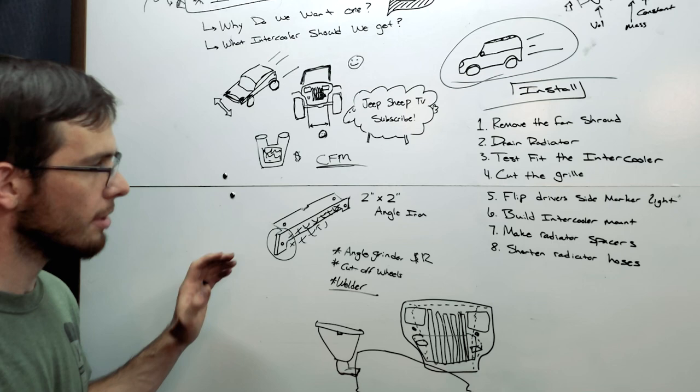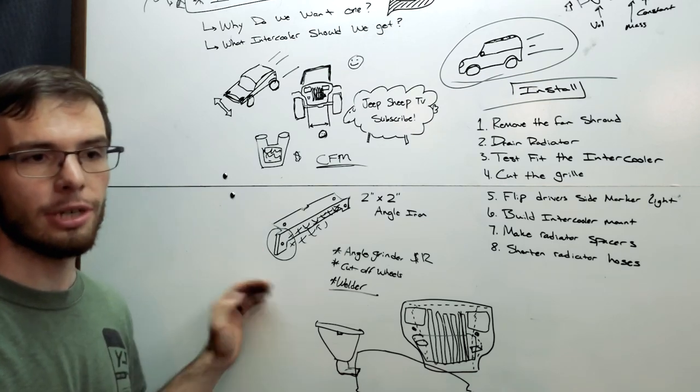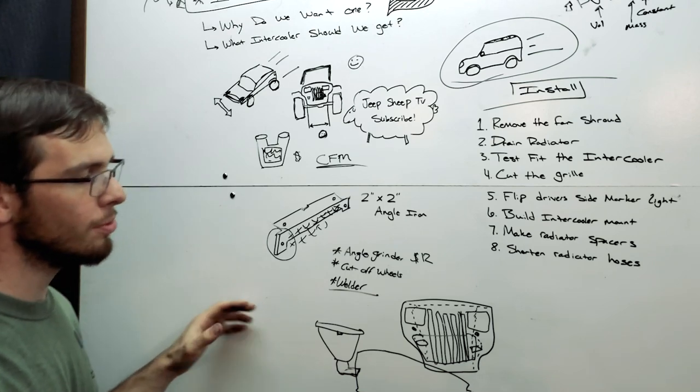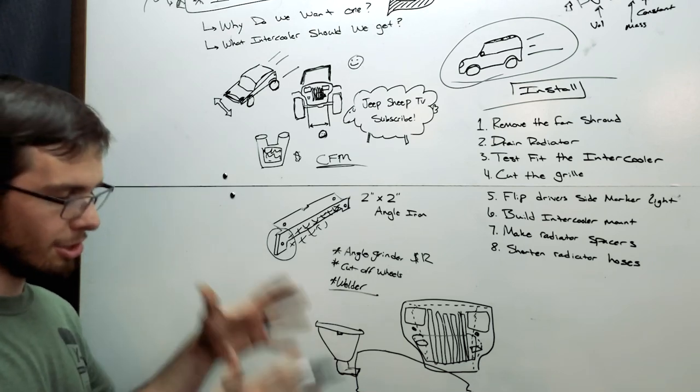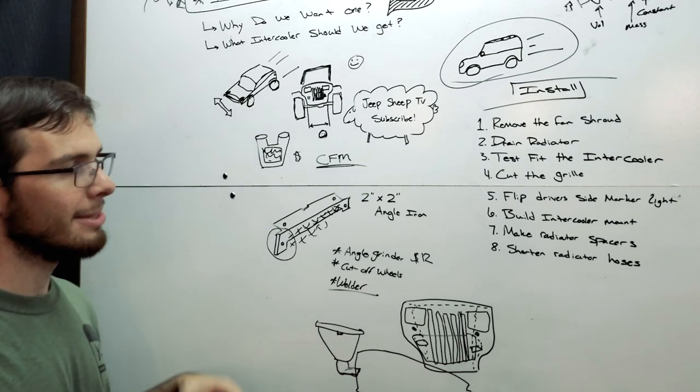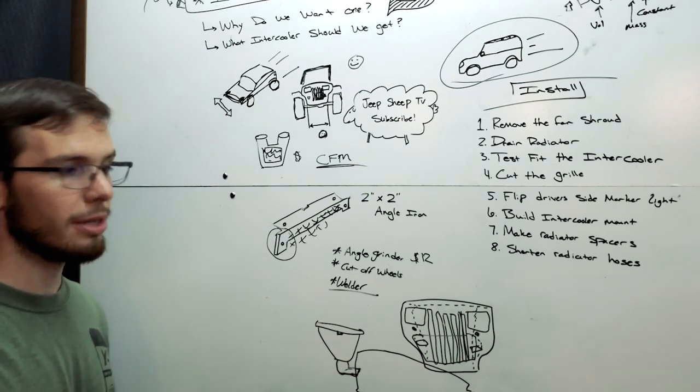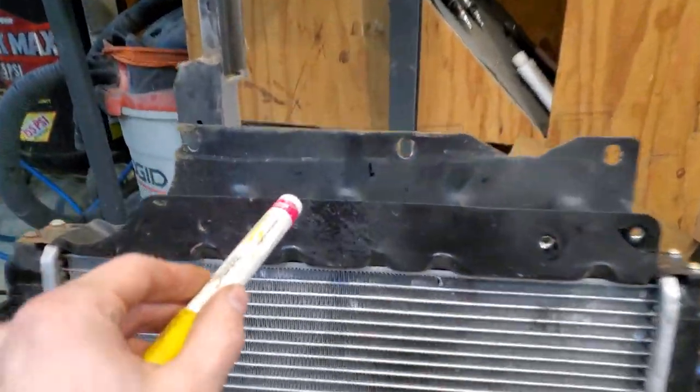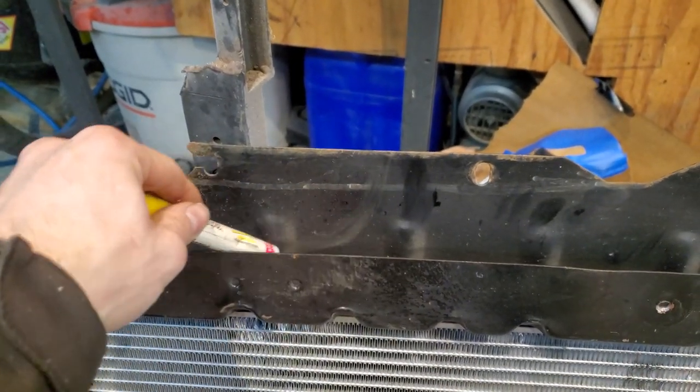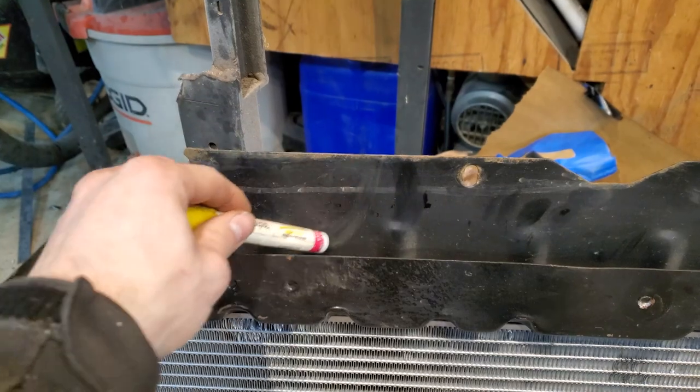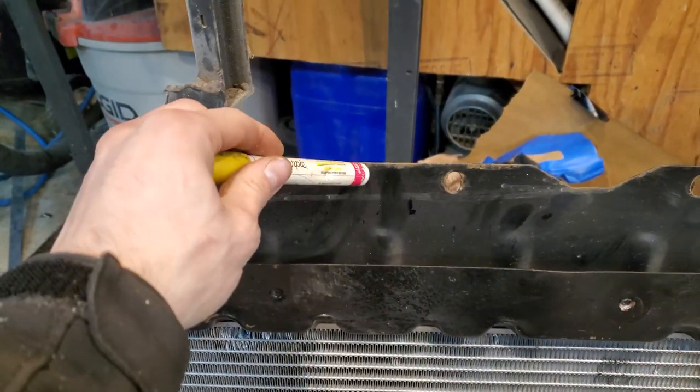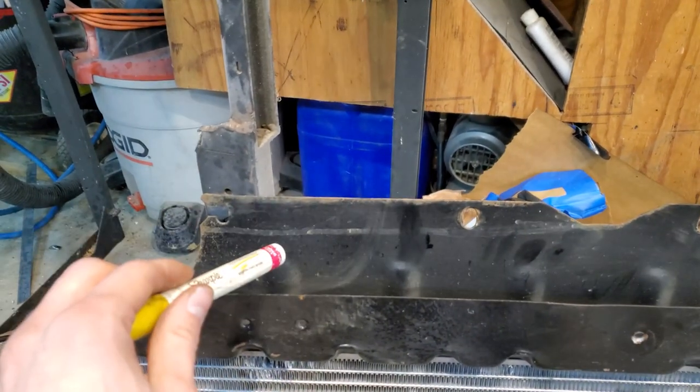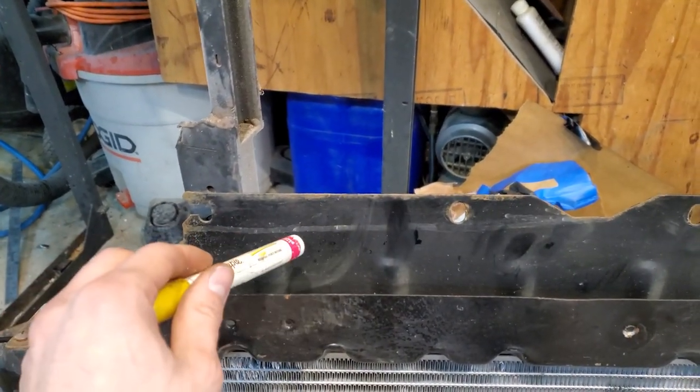Once you have done that, you can again test fit your intercooler. Make sure everything is going to fit just right. And once you've test fitted your intercooler again, you can then take your radiator and set it in place where it's going to go. Now what you're going to run into is the radiator is going to run into the intercooler. This is the top of your radiator. This is the driver's side. We're going to have to cut out a notch like this big to be able to fit the exit pipe of the intercooler. Now my radiator was mounting here and here. And this was just along for the ride. So no harm cutting this guy out.